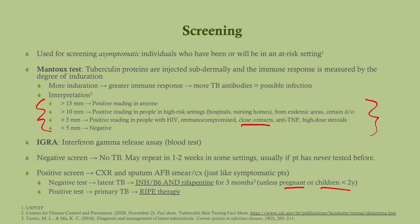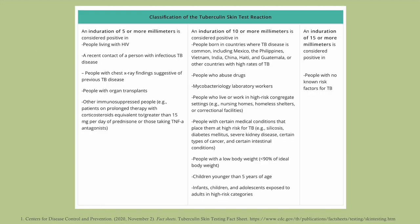If you have a positive chest x-ray and sputum, then you have primary TB. These patients go on to RIPE therapy, which we already talked about.